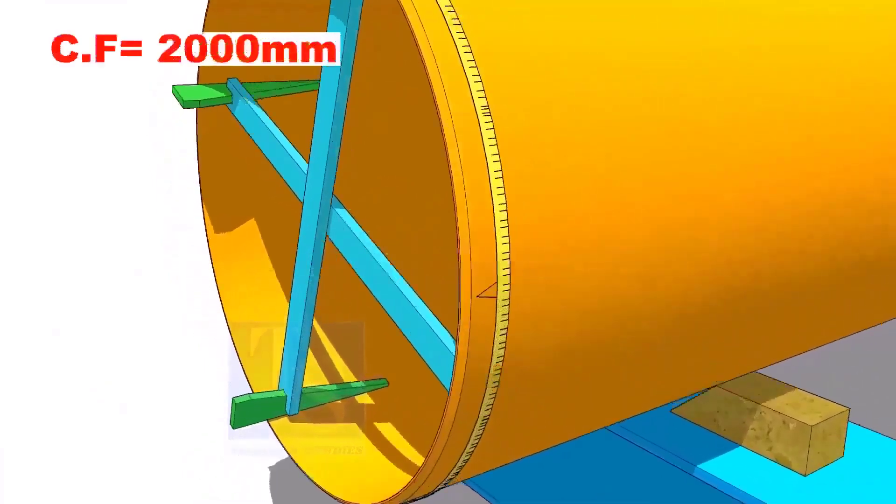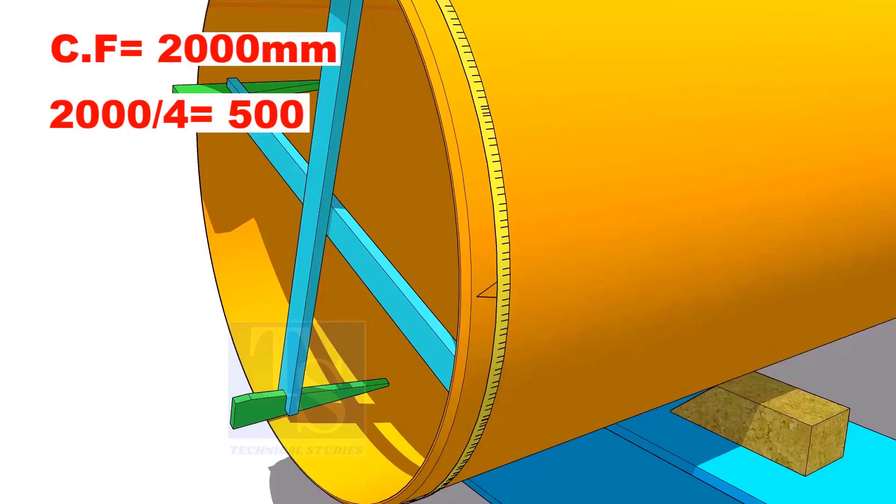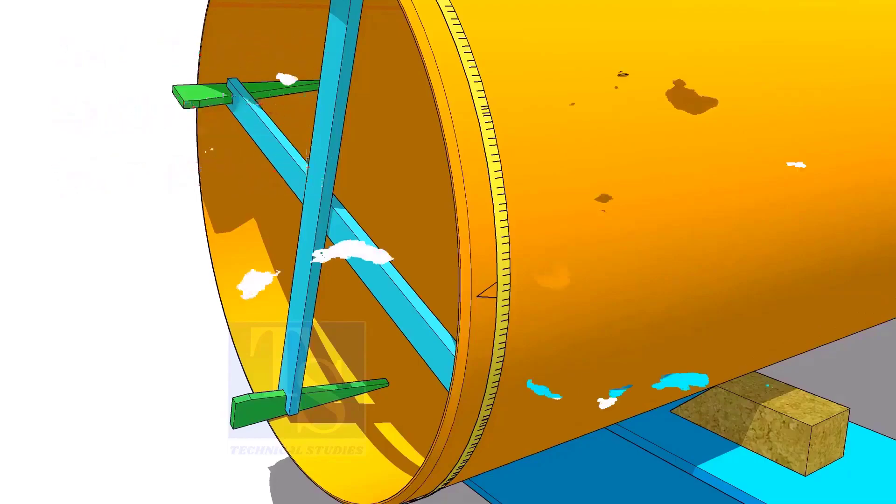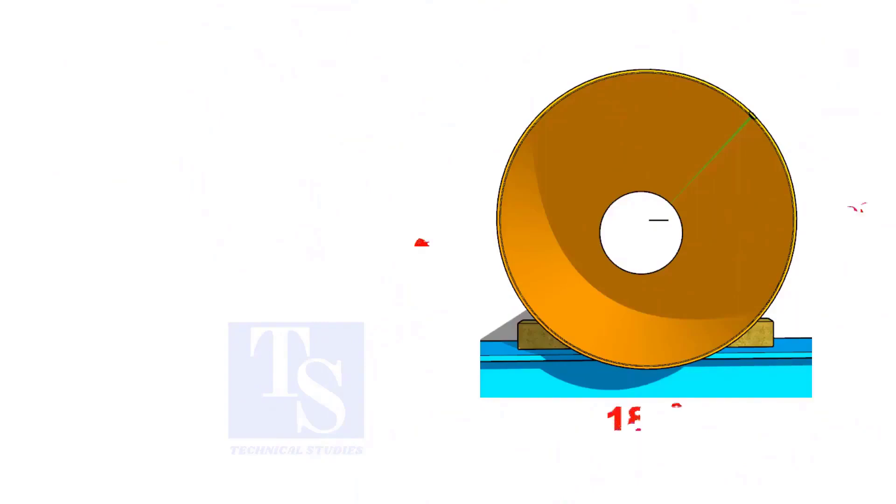Assume that the circumference is 2000 mm. Divide it by 4. Now you have the arc length of 90 degrees. Mark the 500 mm each starting from the center line as 0, 90, 180, and 270.